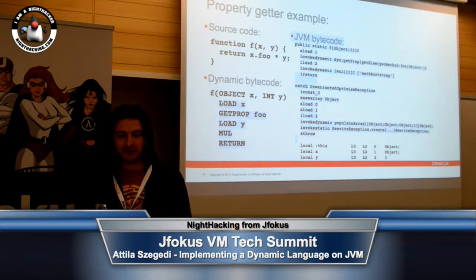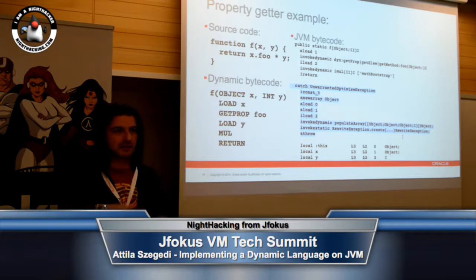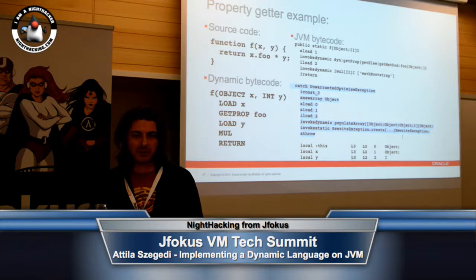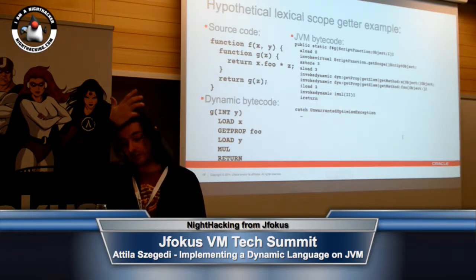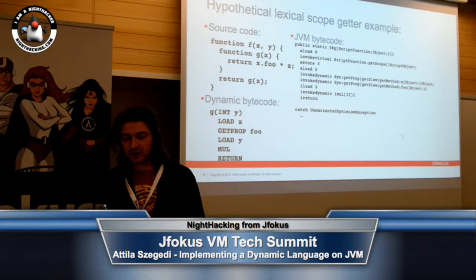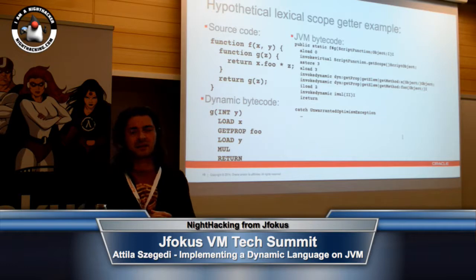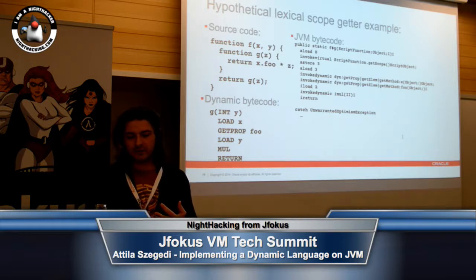Property getters would work the same way. Just as you have a getfield instruction in bytecode, you could have a getprop instruction where you load an object and say 'getprop foo'. The runtime would make sure that the appropriate invoke dynamic is emitted in its place, that the multiplication ends up being an overflow-sensitive optimizing multiplication if it needs be. So as a language designer or language runtime designer, you would emit this and we would figure out the rest for you — including the unwarranted optimism exception, the rewrite exception, the whole shebang with generating the one-time continuation and jumping into it.